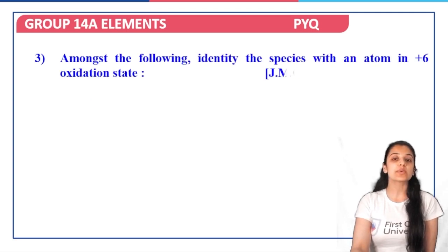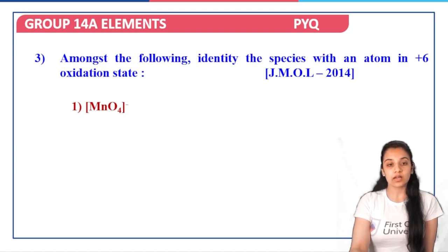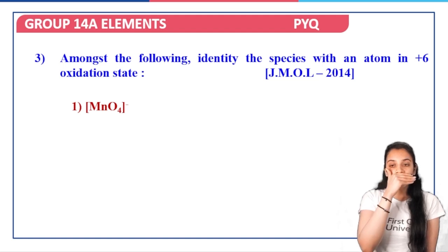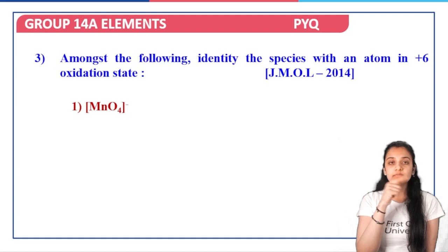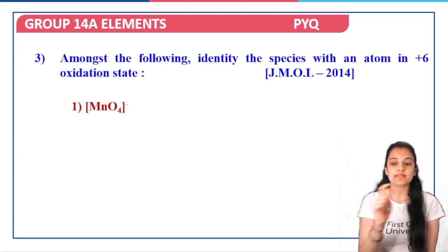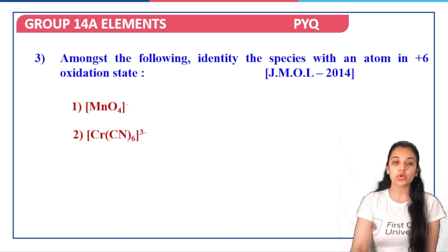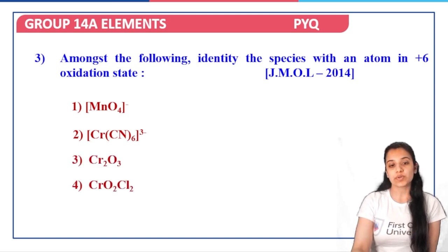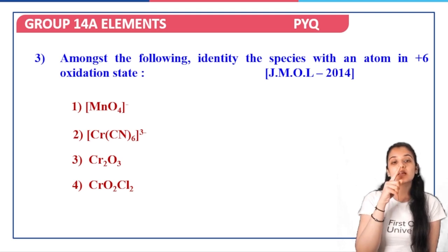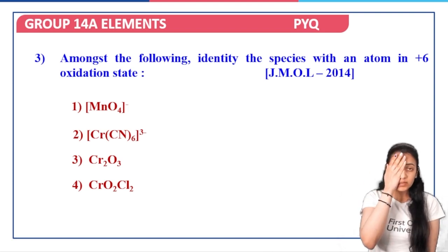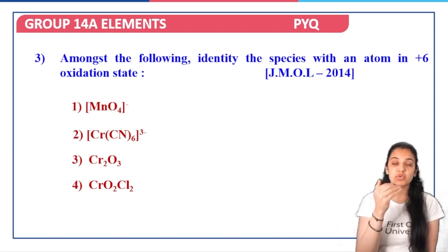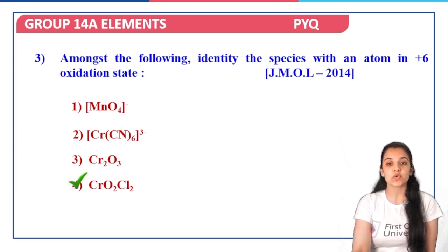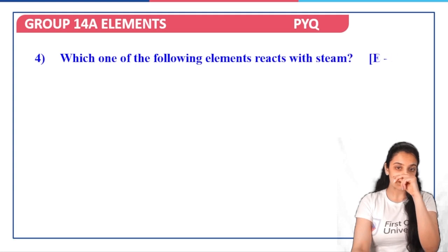Next: identify the species with an atom in +6 oxidation state. For MnO4 minus, let x + (−2×4) = −1, so x = +7 — not +6. For Cr(CN)6, chromium is in +3 oxidation state. For the last option, x − 4 − 2 = 0 gives x = +6. So chromium is present in +6 oxidation state in option four, which is the correct answer.